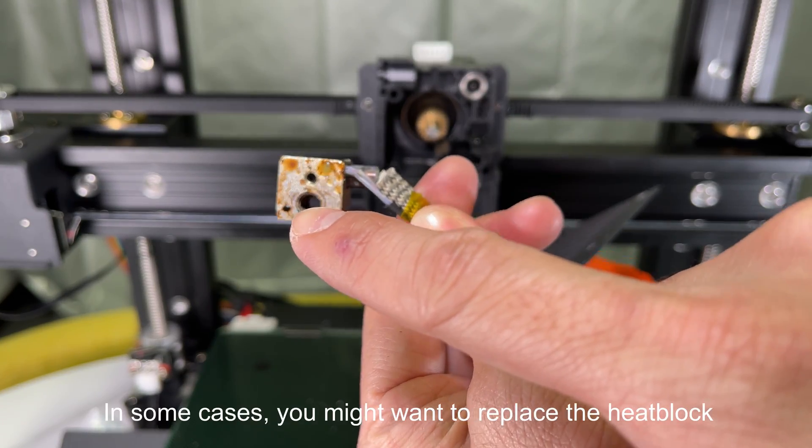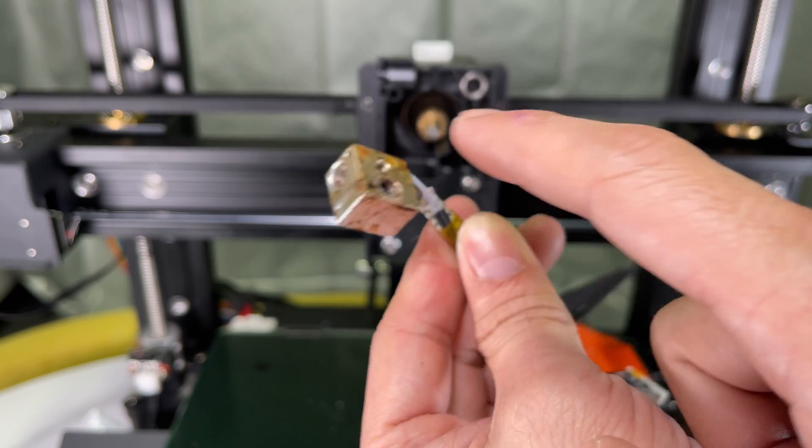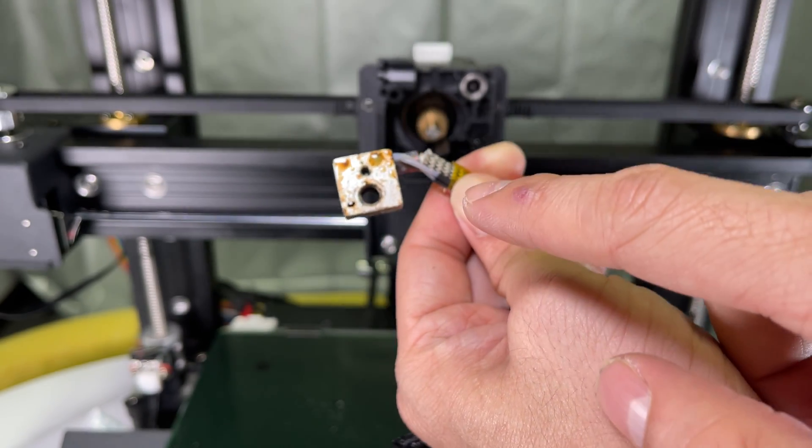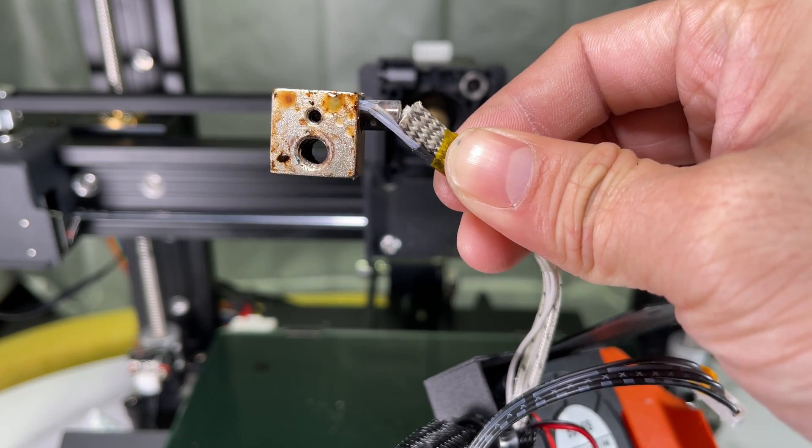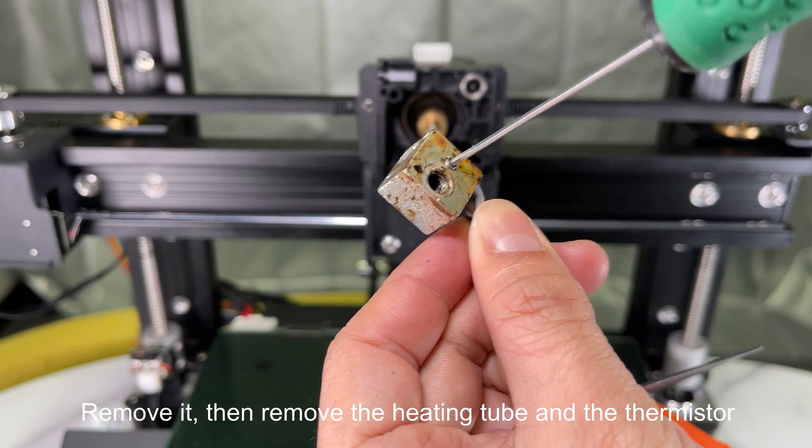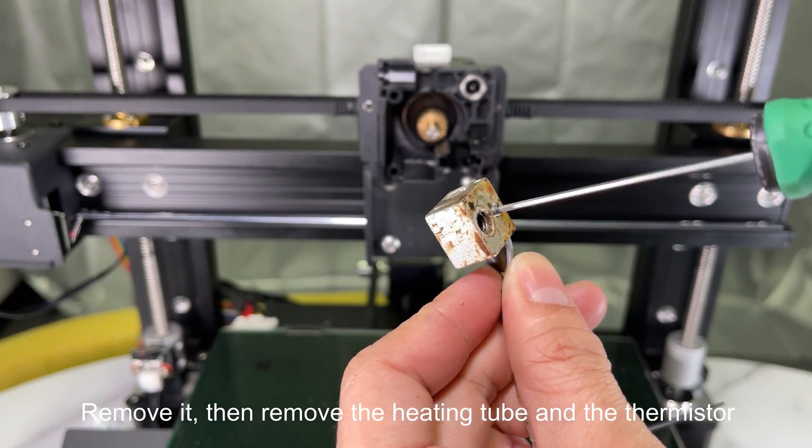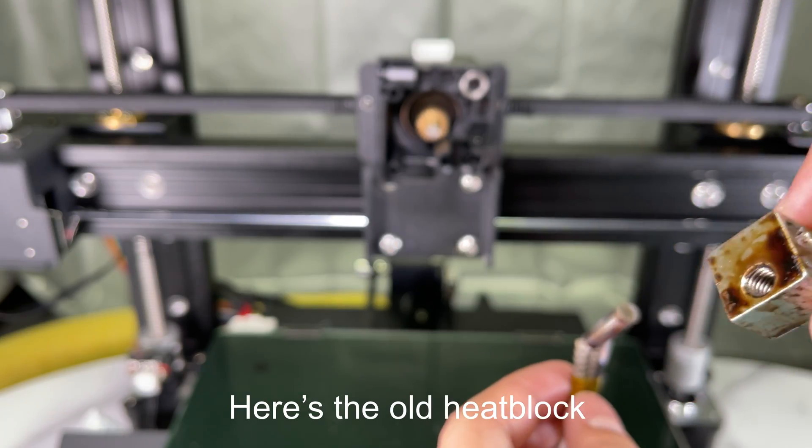In some cases, you might want to replace the heat block. Don't forget this small screw in it. Remove it. Then remove the heating tube and the thermistor. Here's the old heat block.